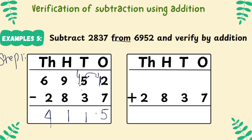I got the answer as 4,1,1,5. Now, whether the answer is correct or not, I need to check it. Whether I have done the subtraction right or wrong, I have to check it. So in that situation, we can do an addition. Write the below number — 2,8,3,7 — as it is. In the above, you are going to write the answer.